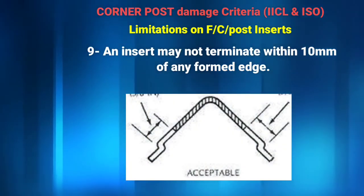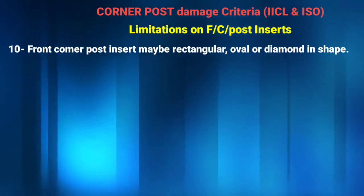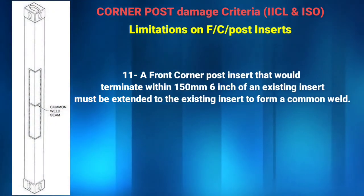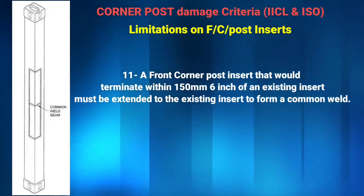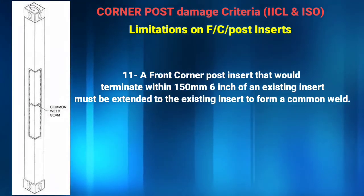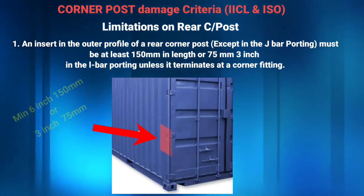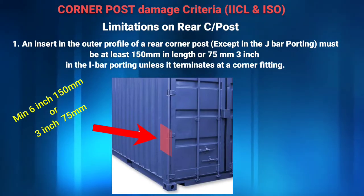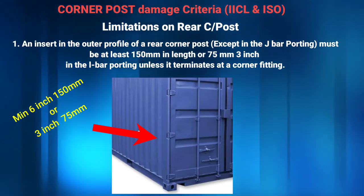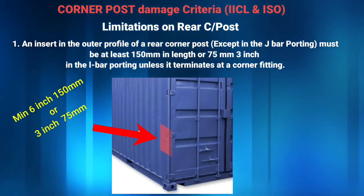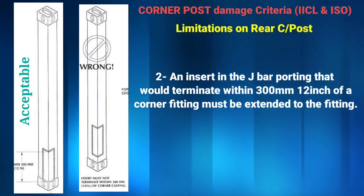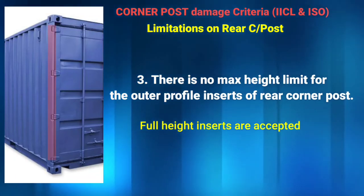9. An insert may not terminate within 10 mm of any formed edge. 10. A front corner post insert may be rectangular, oval, or diamond in shape. 11. A front corner post insert that would terminate within 150 mm (6 inches) of an existing insert must be extended to the existing insert to form a common weld. For rear corner post inserts: an insert in the outer profile must be at least 150 mm in length, or 75 mm (3 inches) in the J bar portion, unless it terminates at a corner fitting. 12. An insert in the J bar portion that would terminate within 300 mm (12 inches) of a corner fitting must be extended to the fitting. 13. There is no maximum height limit for the outer profile insert.